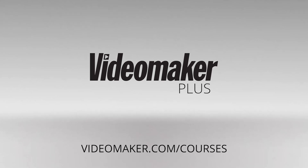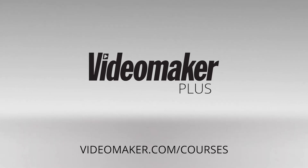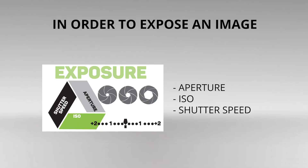Brought to you by Video Maker Plus. When you get to the point in your skills where you're about to switch from shooting video on your smartphone to a DSLR or mirrorless camera, it's time to learn about the exposure triangle. It's a concept as old as photography itself. It consists of balancing aperture, ISO, and shutter speed in order to expose an image.